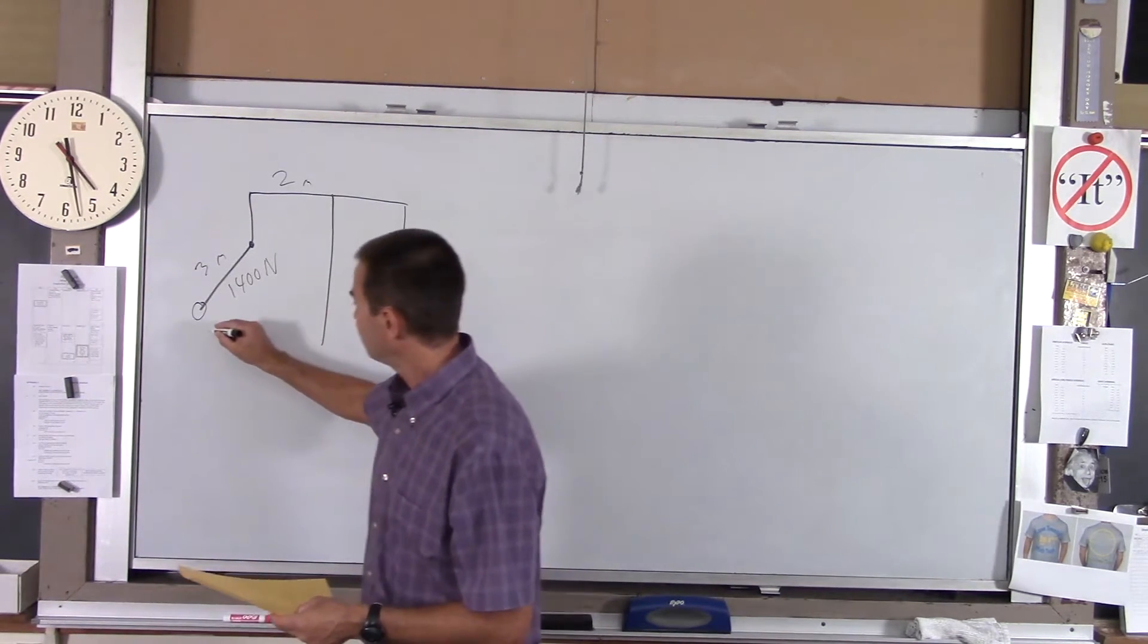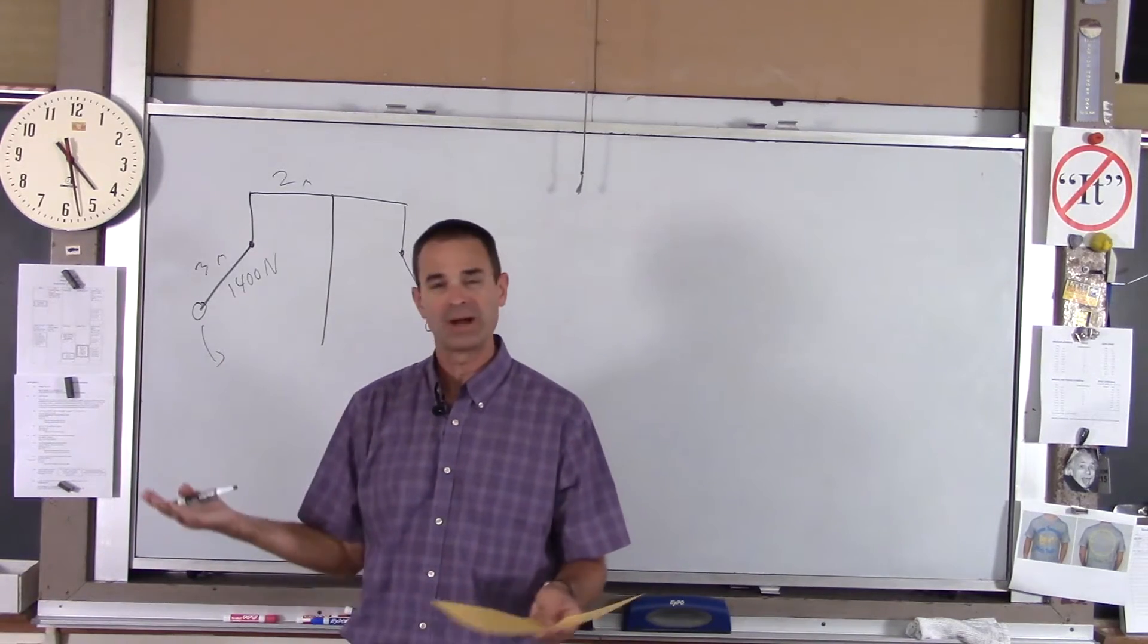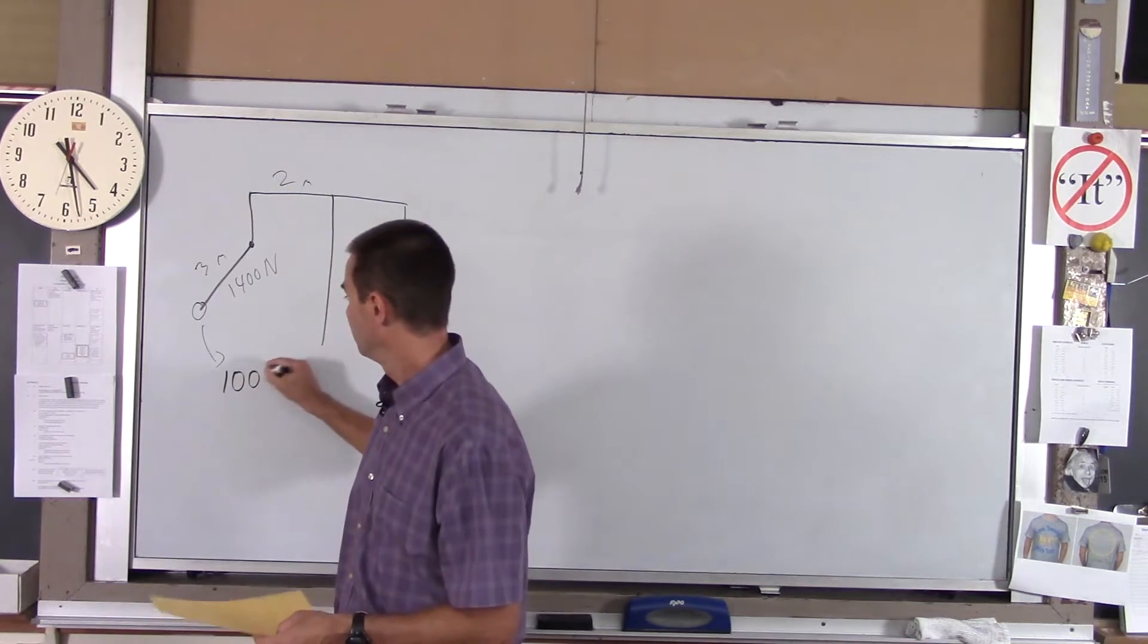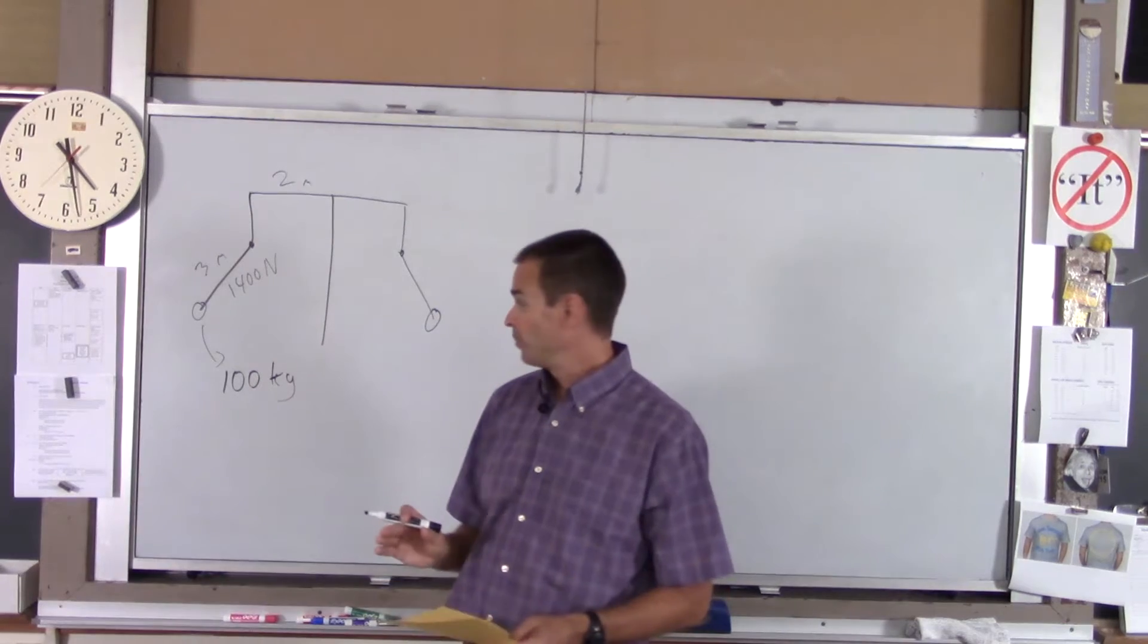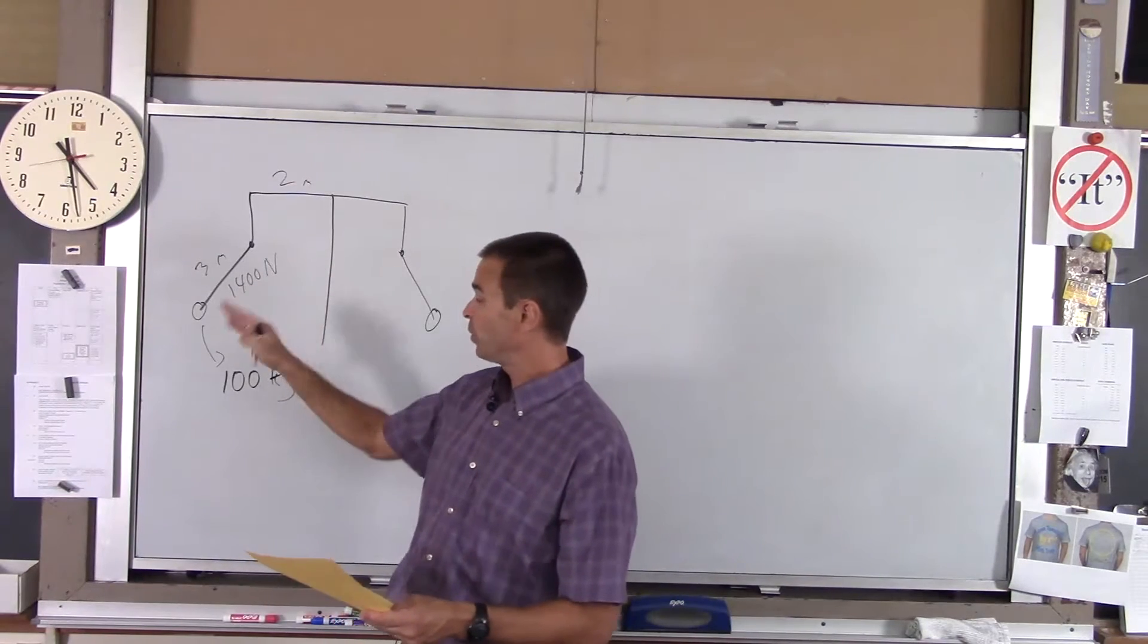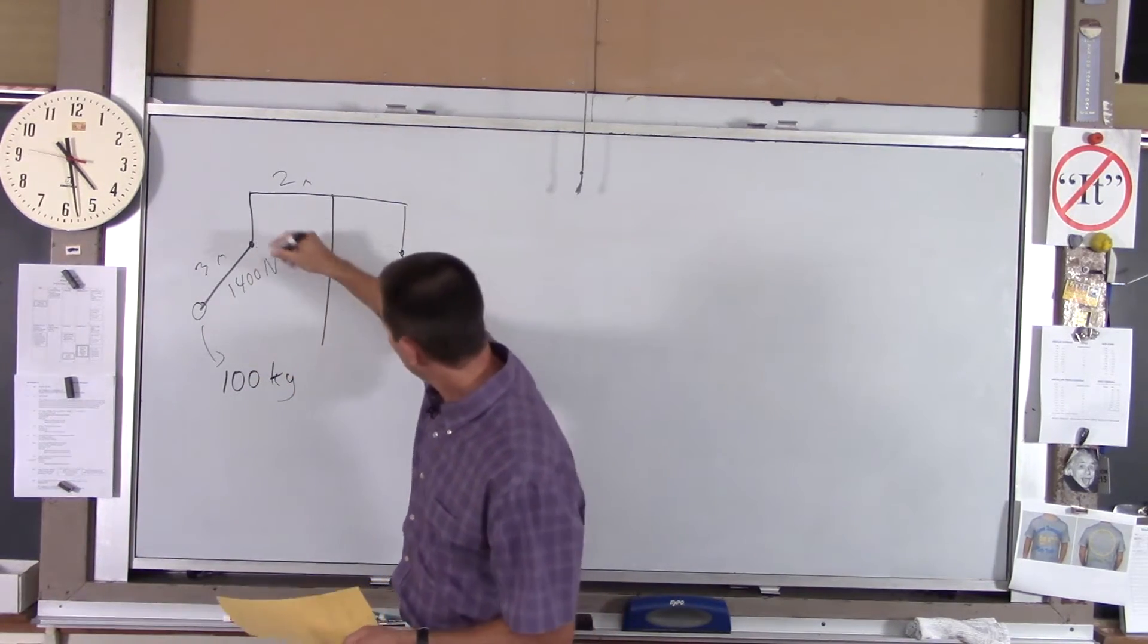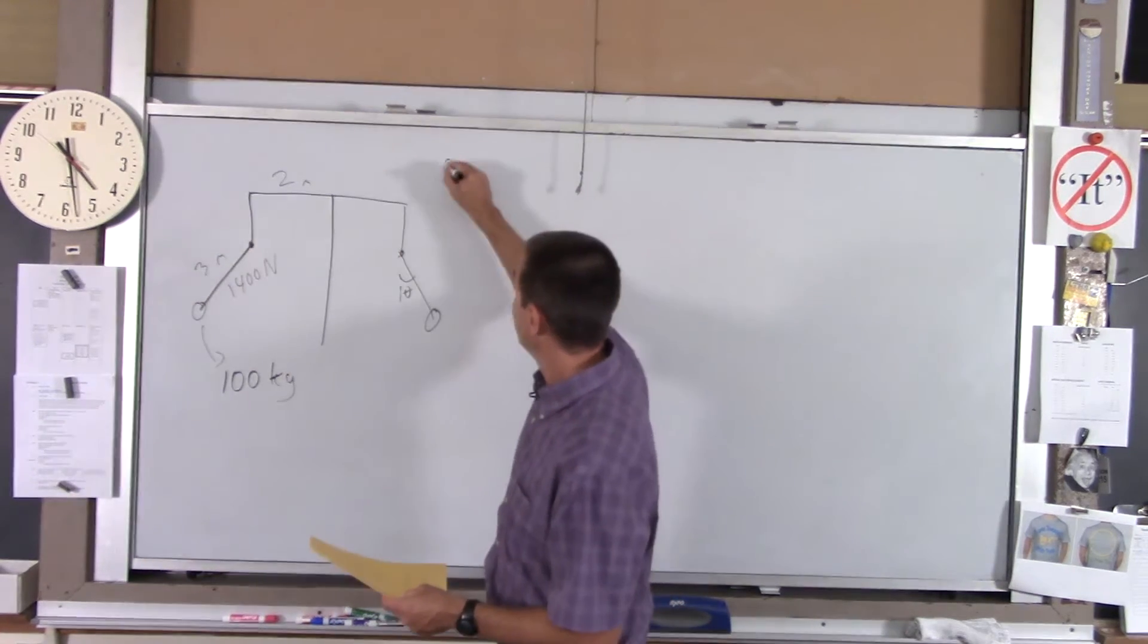And let's say the mass of the seat and the passenger together, we're just going to round it to a nice even number. We'll call it 100 kilograms. So here's what we want to do. I want to find three things. A, when this thing is swinging such that this is 1400 newtons, at what angle from the vertical is that swinging. So I want to find the angle.